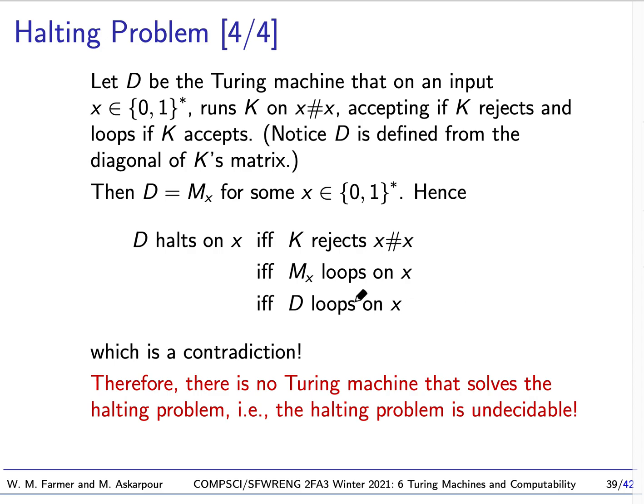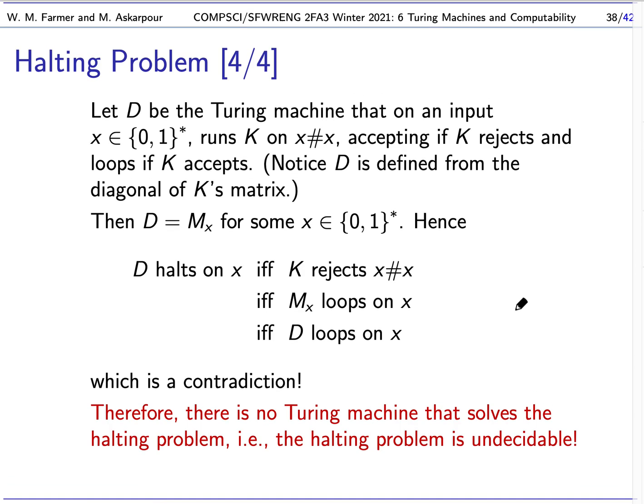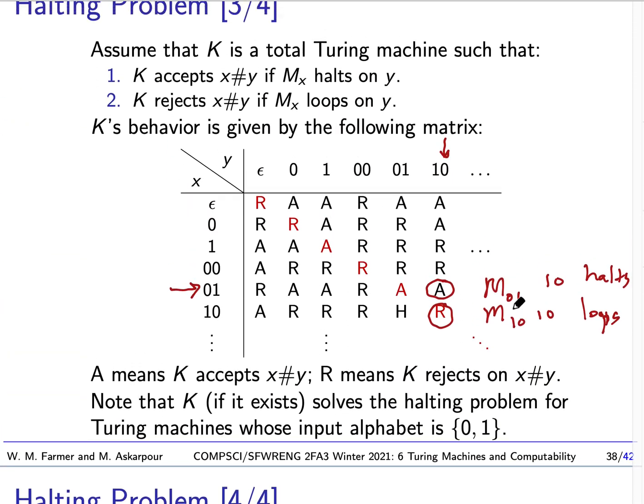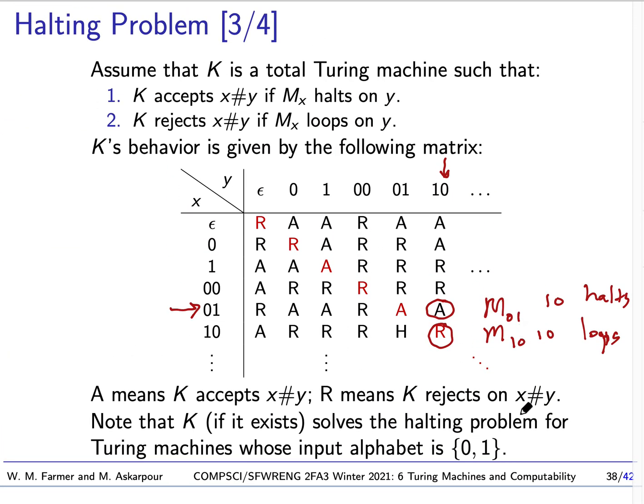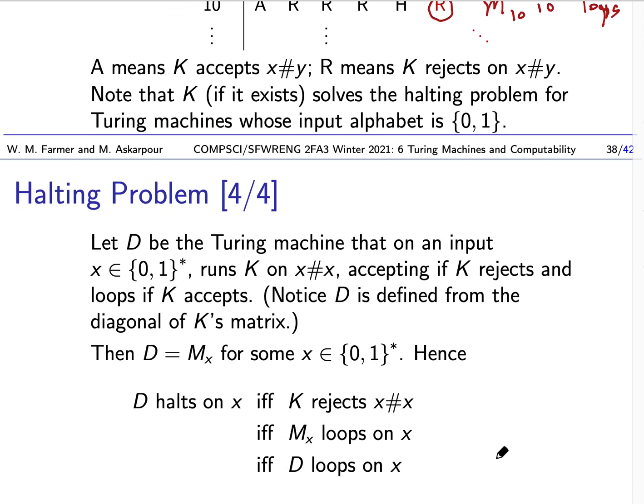That's the way D was defined. So D halts on X is the same as saying K rejects X sharp X. But K, what does K do? K rejects this precisely if the Turing machine for X loops on X. So this means MX loops on X. Now MX is the same as D. So this is the same as saying D loops on X. So what we see here is that D halts on X precisely if D loops on X. Well, this is a contradiction. There's no way a machine can both halt and loop at the same time. So this means there is no possible